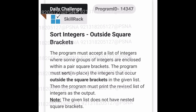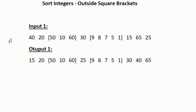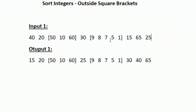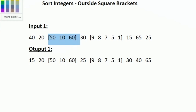This is the question asked in today's SkillRack daily challenge. We will be given an input containing several integers, and some of the integers are enclosed within square brackets — for example, the integers 50, 10, and 60 are enclosed within square brackets.